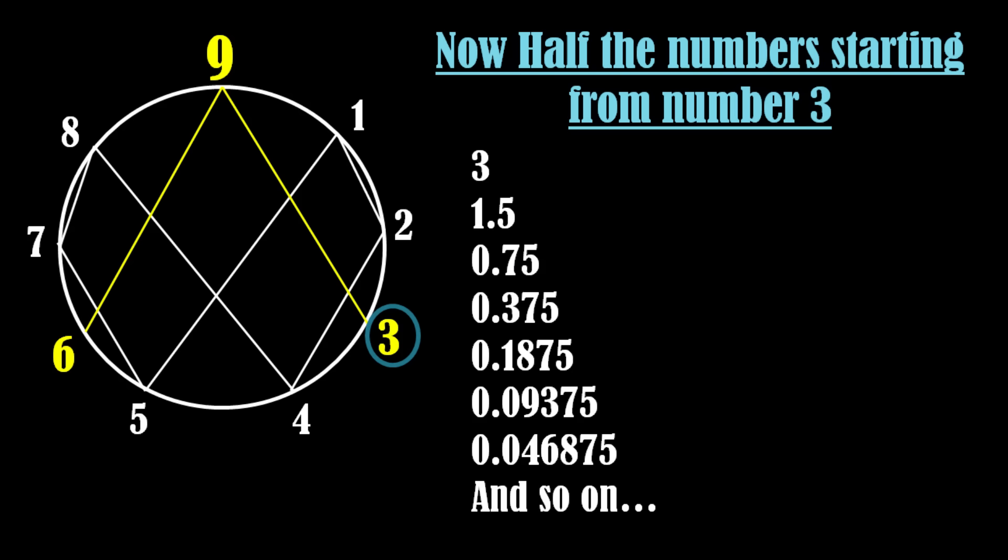Okay, let's do some more maths. This time we will half the numbers repeatedly starting from number 3. Here are the numbers. Now again get the digital roots of the numbers by adding the digits of the number. And here is what we get. Amazing! This time also we get the same numbers 3 and 6.